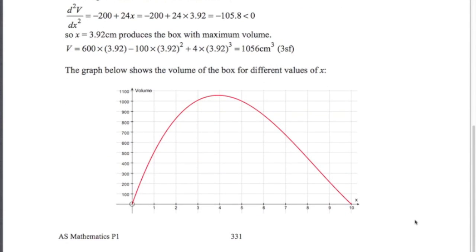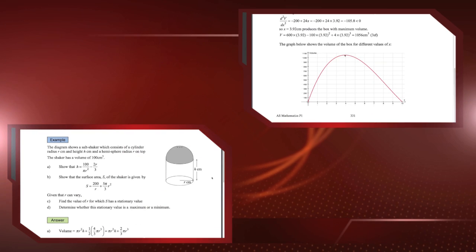Here's the graph showing the volume of the box for different values of x. You can see 4 was pretty close, 3.9 was pretty close, and 3.92 is spot on.